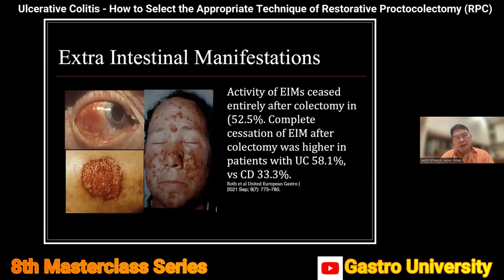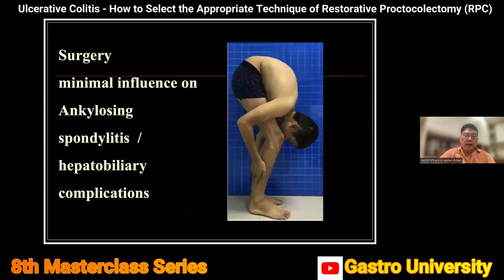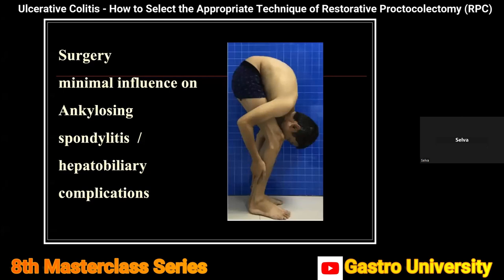Many of us don't realize — especially in Asia or East Asia — that extra-gastrointestinal manifestations of ulcerative colitis are not so common, though in Europe they are much more common. Having said that, the activity of these extra-GI manifestations ceases after total colectomy in up to 50% of patients, and that is higher in UC compared to Crohn's disease. However, patients with ankylosing spondylitis and those with hepatobiliary complications don't seem to be helped by colectomy.